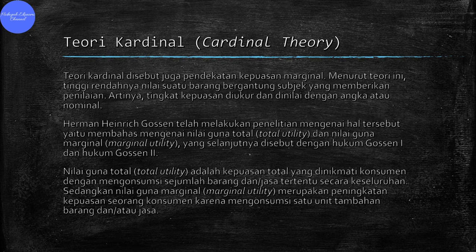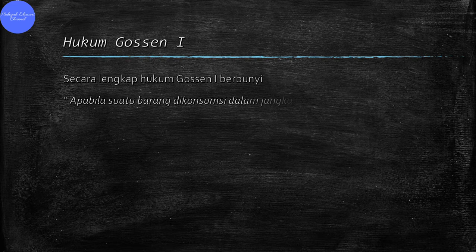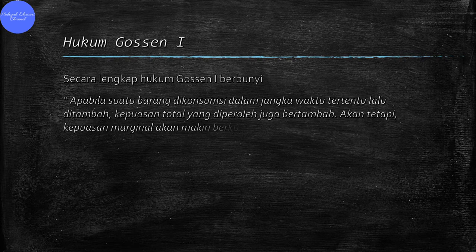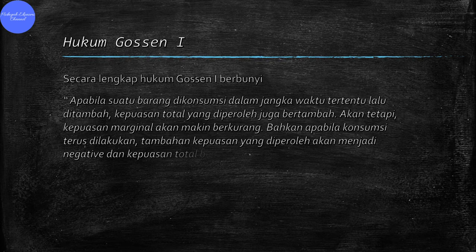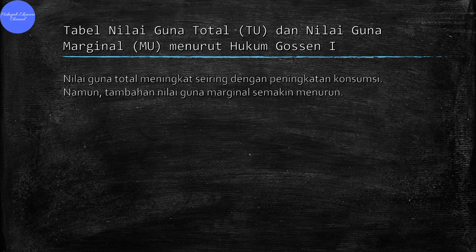Hukum Gossen 1 berbunyi: apabila suatu barang dikonsumsi dalam jangka waktu tertentu lalu ditambah, kepuasan total yang diperoleh juga bertambah. Akan tetapi, kepuasan marginal akan makin berkurang. Bahkan, apabila konsumsi terus dilakukan, tambahan kepuasan yang diperoleh akan menjadi negatif dan kepuasan total berkurang. Untuk dapat memahaminya, bisa simak tabel berikut, yaitu tabel nilai guna total dan nilai guna marginal menurut Hukum Gossen 1.